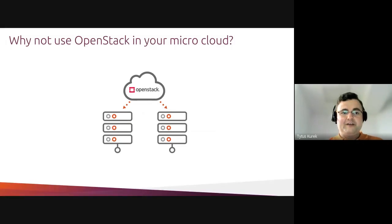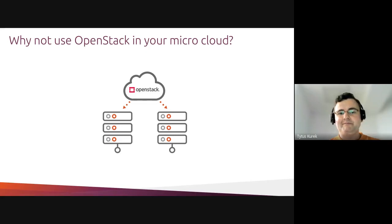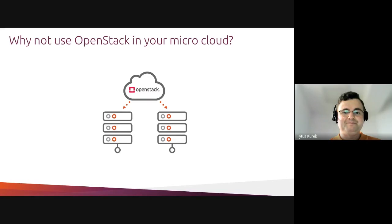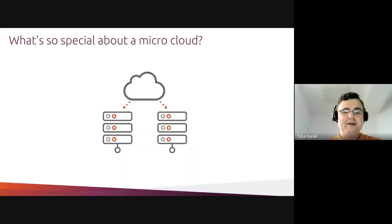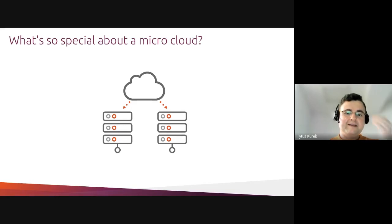This leads to the question: why not use OpenStack in your micro cloud? When we go outside of the data center, we have micro data centers — either a single server or just a few servers, maybe three for high availability. Why not use OpenStack in this kind of environment? There are a couple of things to consider, because micro clouds are a little bit special and different compared to private clouds running in big data centers.